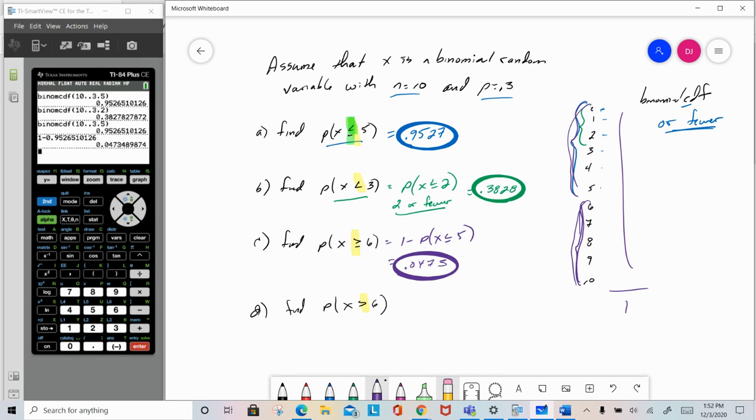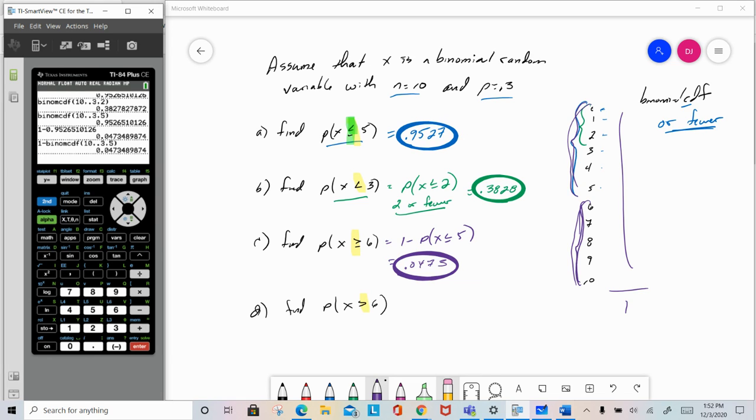So what I need to do is 1 minus that 0.9526 or 0.0473. Now, if I'm going to do this in my calculator, probably what I would do is go 1 minus second distribution. Also, by the way, I can go alpha B, and we'll select alpha B. 10 trials, probability of success is 0.3, 5 or fewer. Paste that. And now, notice we've got 1 minus the probability of 5 or fewer will equal the probability of 6 or more.